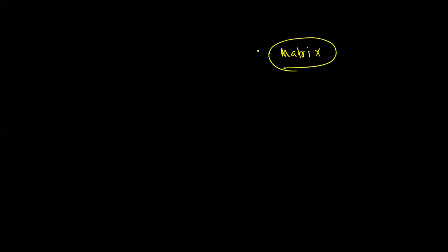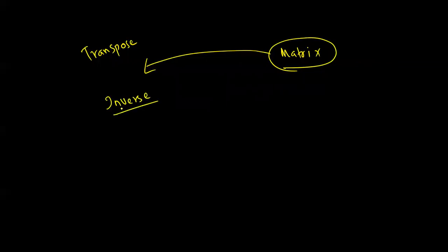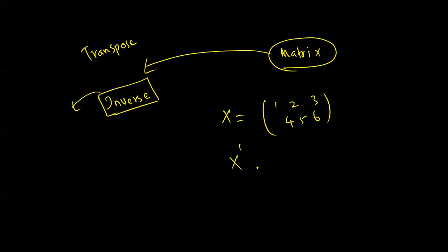We are using a matrix method to find out these coefficients. Before using the matrix method, you should understand what is called the transpose of a matrix and how to calculate the inverse of a matrix. For example, if I have a matrix [1 2 3; 4 5 6], the transpose — denoted x', xT, or x-dash — is formed by writing the rows as columns: [1 4; 2 5; 3 6]. All three notations are the same.